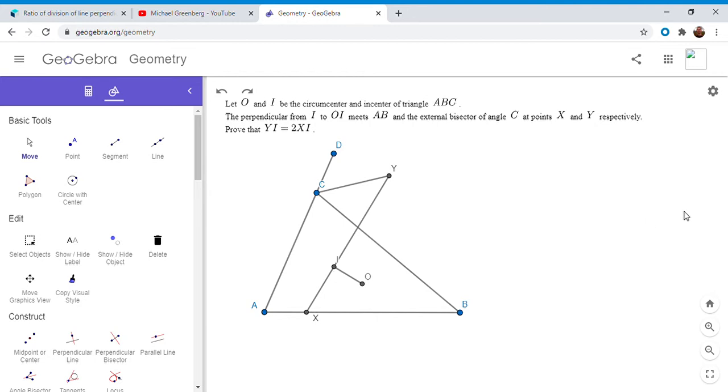This seems like a really interesting problem because there's not many problems that involve the segment OI. I think there's one I posted on my channel a while back with an isosceles triangle, but really there's not a lot of them.